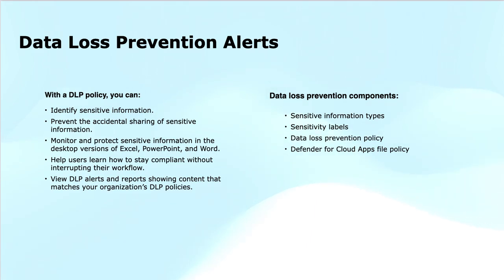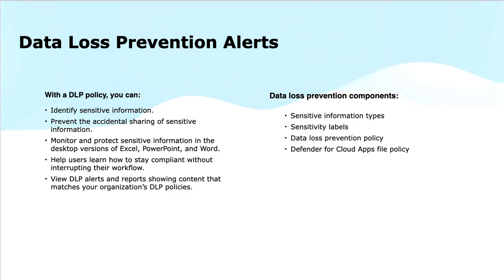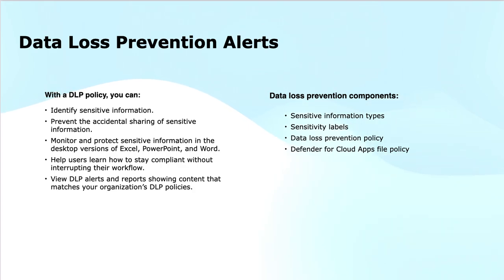The fourth component is Defender for Cloud Apps file policy. A policy within Microsoft Defender for Cloud Apps, formerly known as Cloud App Security, is used to focus on the protection of files in cloud applications like OneDrive, SharePoint, or third-party cloud services. It helps prevent the upload, sharing, or download of sensitive information in cloud apps. You can configure policies to detect and block risky activities like uploading sensitive files to non-approved cloud storage services or sharing sensitive files with external users.